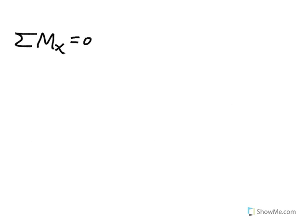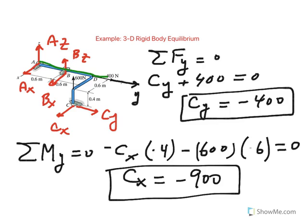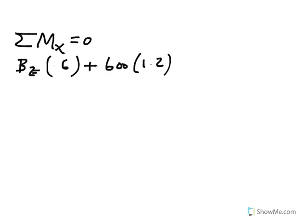So let's take a look. So we start with B sub Z. So the moment of B sub Z about X axis is B sub Z times 0.6. And then the moment of the 600 is 600 times 1.2 positive. These are based on the right-hand rule. And finally, the moment of C sub Y that we just calculated right here. The C sub Y right here has moment about X axis. And that's going to go actually positive. So that would be C sub Y times 0.4.